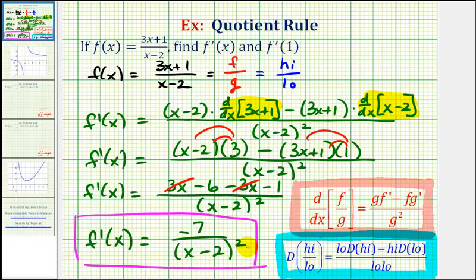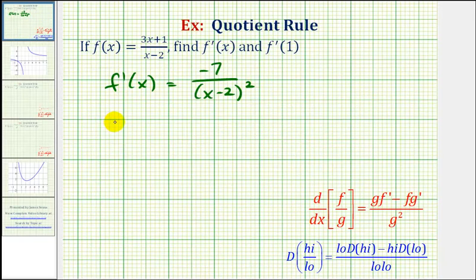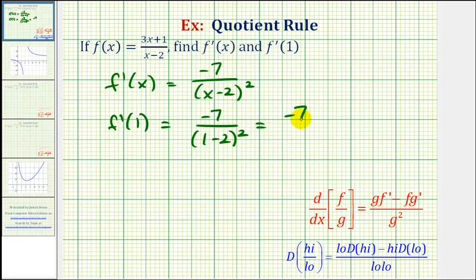The second part of this question asks us to find f prime of one. Now that we have our derivative function, we'll substitute one for x and evaluate. Remember, this will tell us the slope of the tangent line when x equals one. So f prime of one is going to be equal to negative seven, divided by the quantity one minus two squared. This will be negative one squared, so f prime of one is equal to negative seven.